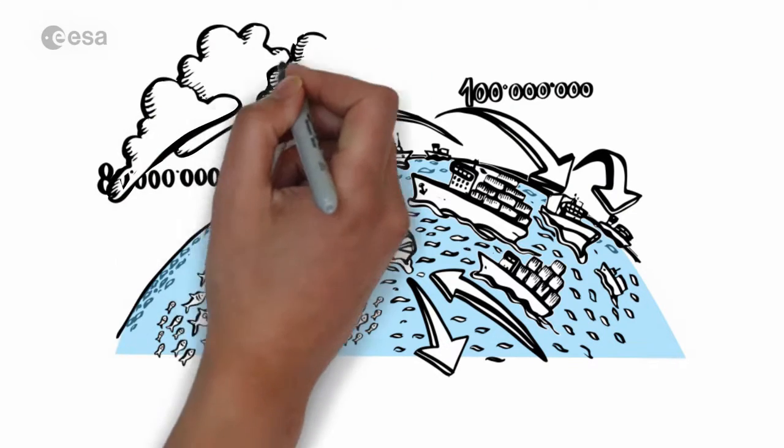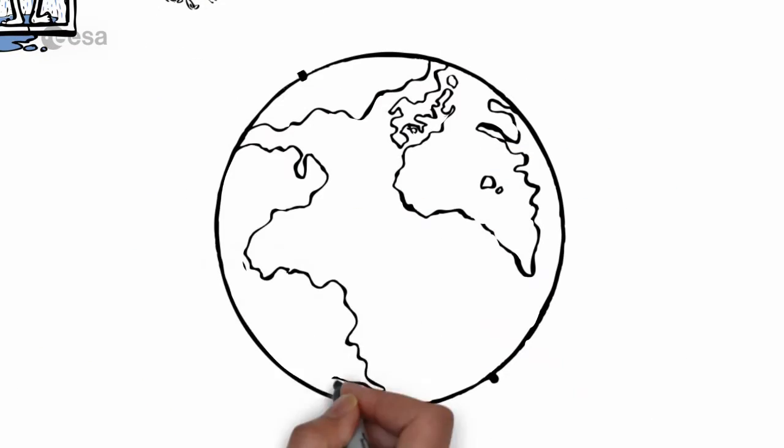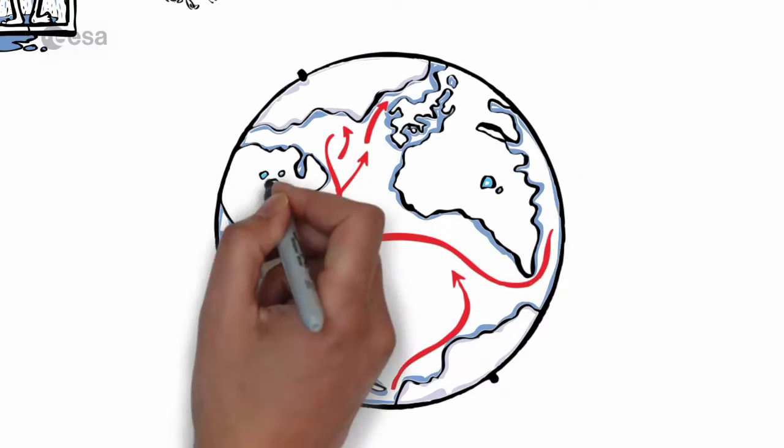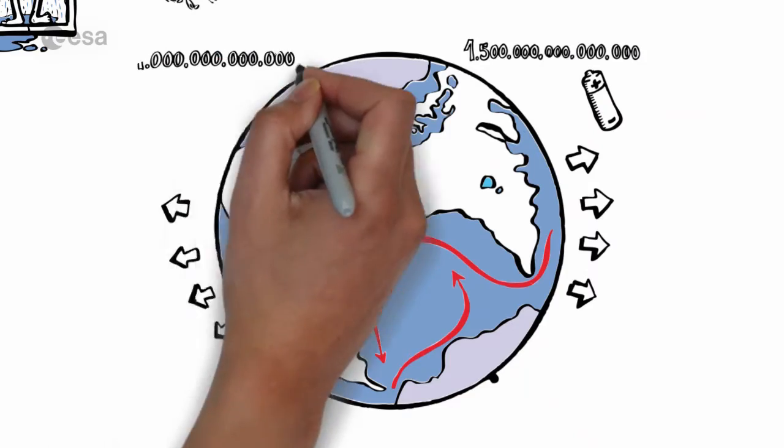The oceans may seem distant but their role is so important in how our climate evolves. Ocean currents shuffle 1.5 million gigawatts of energy around the globe and a trillion litres of ocean water evaporate into the atmosphere every single minute.